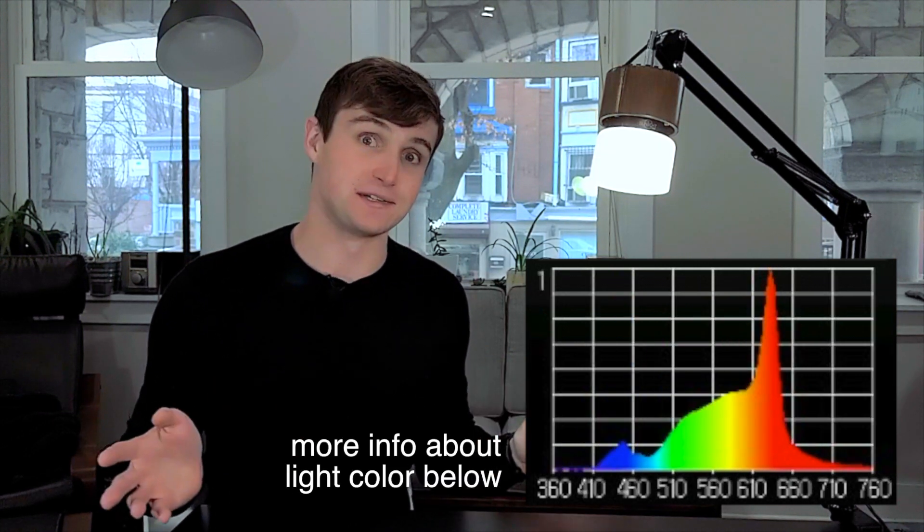What makes MySun different is it's one of the first lighting products that can change color automatically throughout the day. During the day, MySun provides ample blue light, signaling to the circadian rhythm that it's daytime. The amount of blue light decreases as evening approaches.